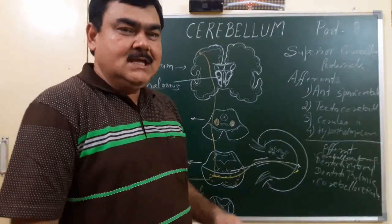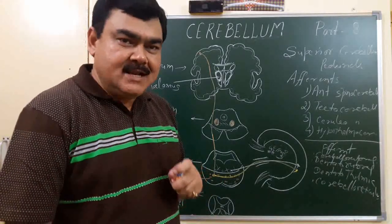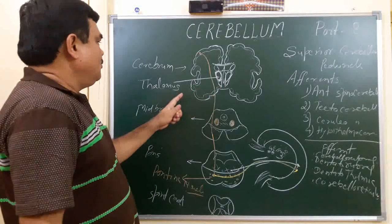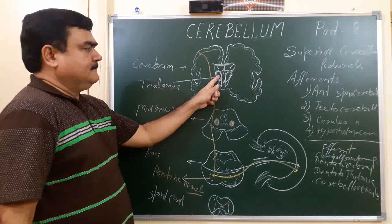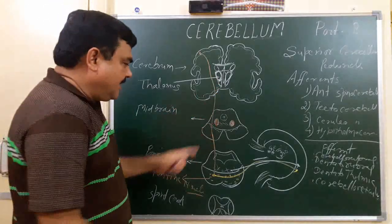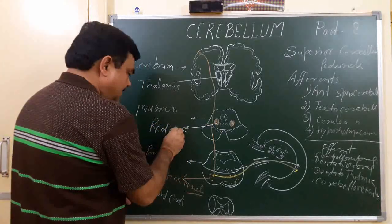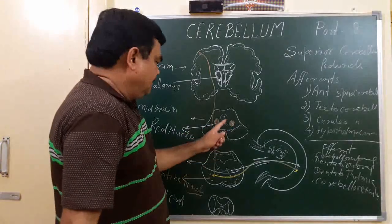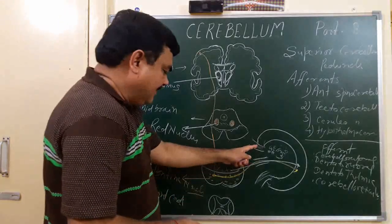Now we will discuss the nerve fibers passing through the superior cerebellar pedicle. Here in this diagram you can see this is the cerebellum, this is the thalamus. Here is the red nucleus, which is present in the midbrain. This is the superior cerebellar pedicle.